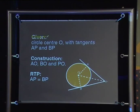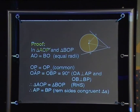As I read through the formal proof for this, see if you can follow the logic and reasoning of the proof on the diagram. We are given circle centre O with tangents AP and BP. We construct AO, BO and PO. What we are aiming to prove is that the tangents AP and BP are equal. The proof is based on congruency. In triangles AOP and BOP, AO equals BO because they are equal radii. OP is common and angle OAP equals angle OBP equals 90 degrees because the radii are perpendicular to the tangents.